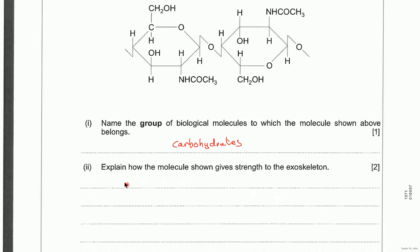Because chitin is very similar to cellulose. So basically what you have to say is that the beta glucose molecules are rotated by 180 degrees. They form long straight chains and the chains can hydrogen bond together to form microfibrils.